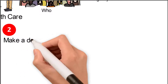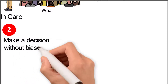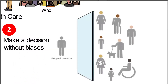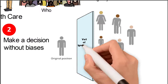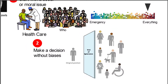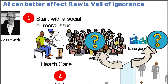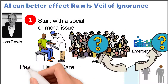What Rawls says is that we have to make a decision without biases. The original position behind the Veil of Ignorance is one where the person doesn't know who they are — they don't know whether they get health care or not, and they don't know what level they may need. They're making a decision based on not knowing that.